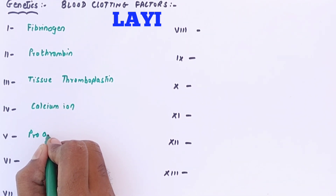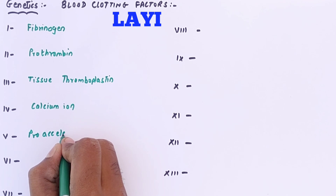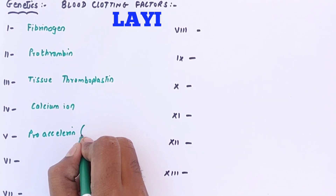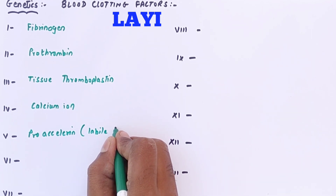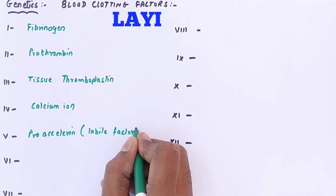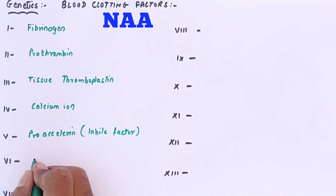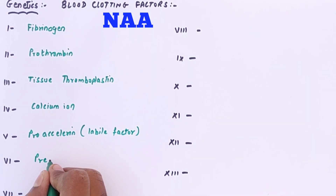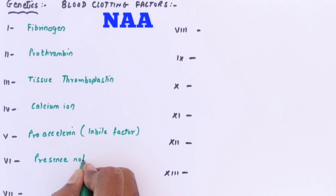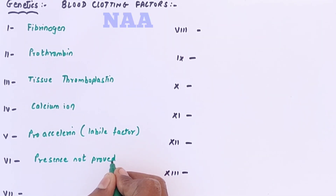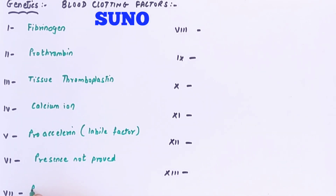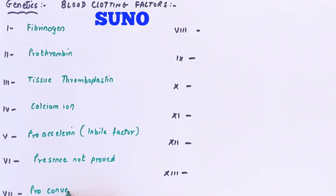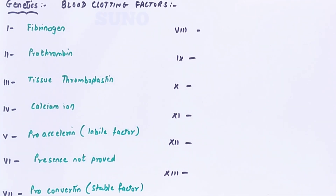Lai stands for labile factor, which is also known as pro-accelerin (factor 5). Na means the sixth blood clotting factor's presence is not yet confirmed or proven. Suno stands for proconvertin (factor 7), which is a stable factor.